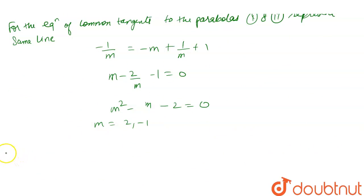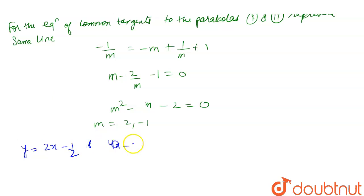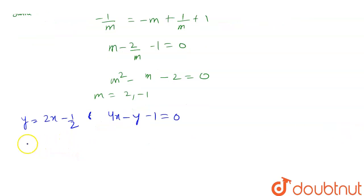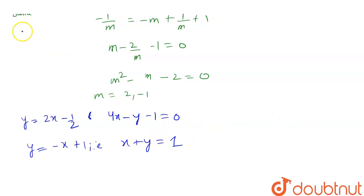We put these values into the equation. For m = 2: y = 2x - 1/2, giving 4x - y - 1 = 0. For m = -1: y = -x + 1, giving x + y = 1. These are the equations of the common tangents.